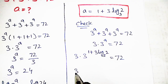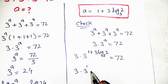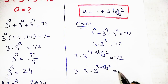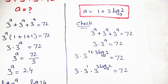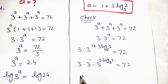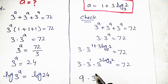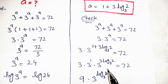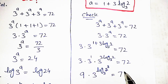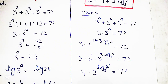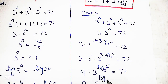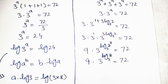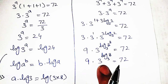We write it as 3 into 3 raised to 1 into 3 raised to 3 log base 3 of 2 is equal to 72. The 3 times 3 becomes 9, giving 9 into 3 raised to log base 3 of 2 raised to the power 3 is equal to 72. Since 2 raised to the power 3 is 8, we get 9 into 3 raised to log base 3 of 8 is equal to 72.